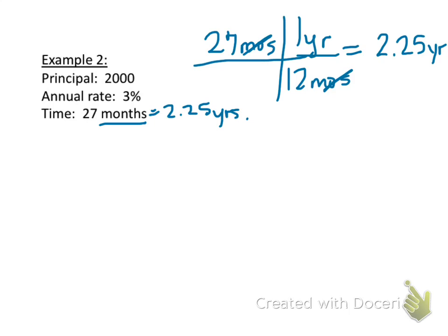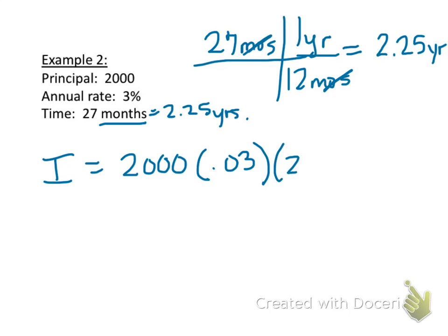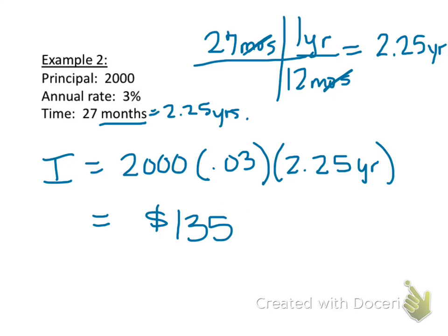I have to have years to do the calculation correctly. My interest is equal to the principal times the rate times the time: 2,000 times 0.03 — I'm taking my percent and changing it to a decimal — times 2.25 years. I'll get an interest of $135 added to my account.